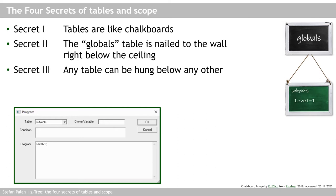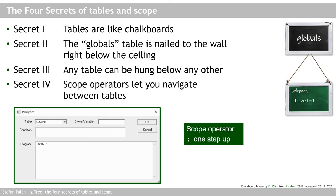But how do I now reach the globals table? How can I change what is recorded on this chalkboard? Well, that brings me to the second term I talked about at the beginning: scope. Or more precisely, the scope operator, and our fourth and final secret. Scope operators let you navigate between tables. Now the first scope operator is the colon, and it allows you to move upward to chalkboards hung higher up on the wall.